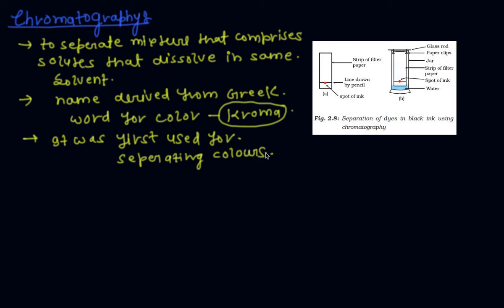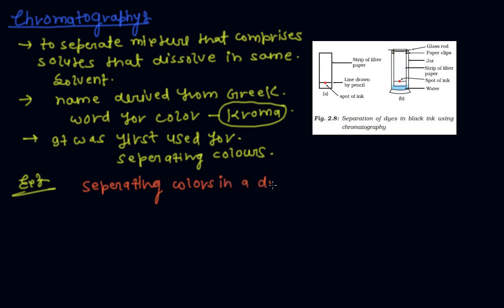Basically, chromatography is based on the differential affinities of compounds towards two phases: stationary and mobile phases. For example, chromatography is used for separating colours in a dye.